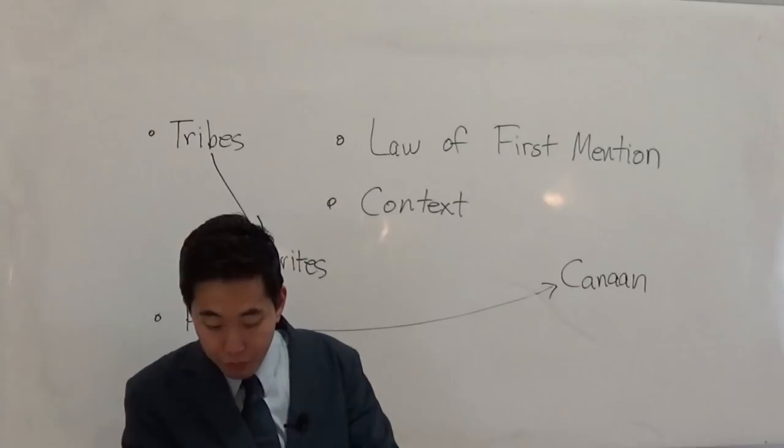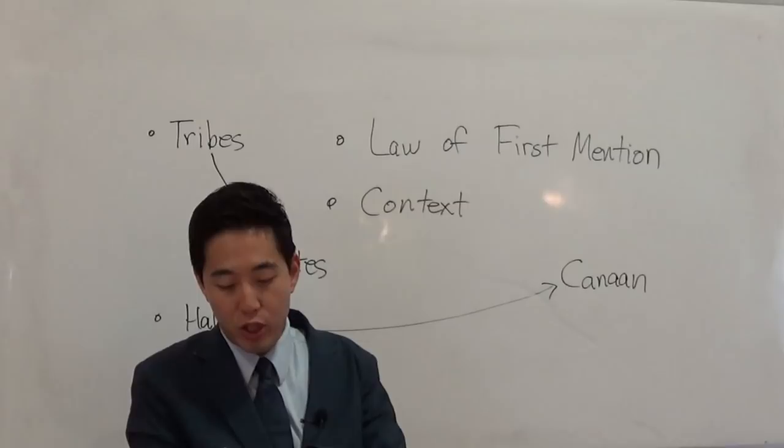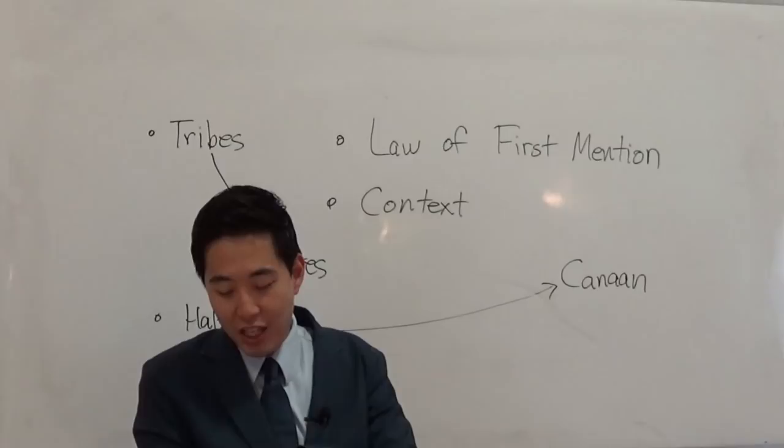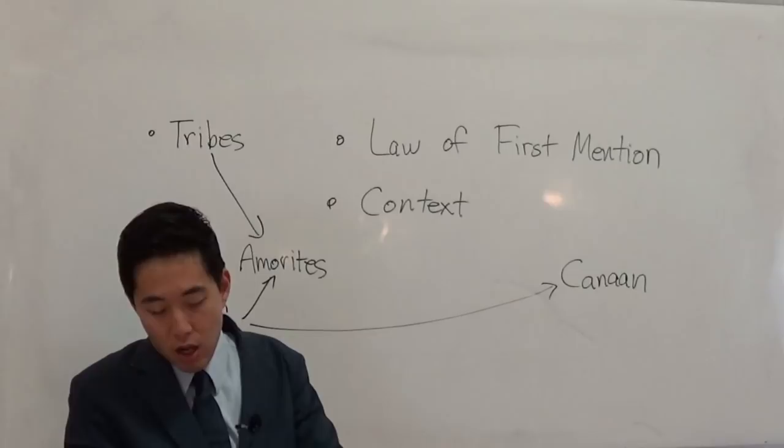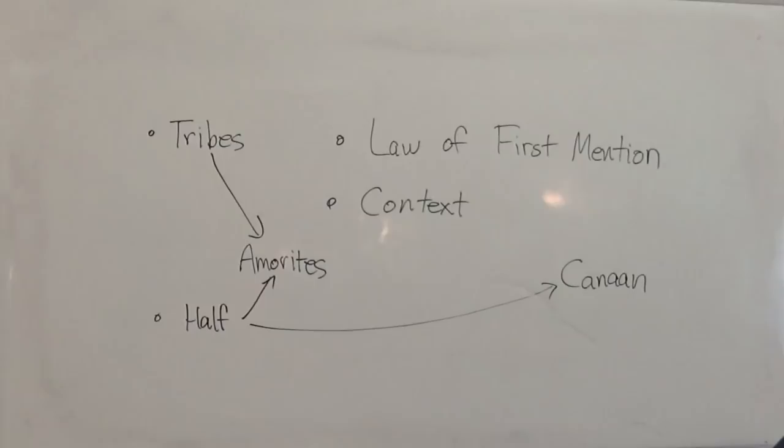Now, look at verse 3 from Syhar, which is before Egypt, even unto the borders of Ekron northward, which is counted to the Canaanite, five lords of the Philistines, the Gazathites and the Ashdathites, and the Ashkelonites, the Gittites and the Ekronites, also the Abites, from the south all the land of the Canaanites, and Mera, that is beside the Sidonians, unto Aphek, to the borders of the Amorites, and the land of the Giblites, and all Lebanon, toward the sun rising from Baal-gad, under Mount Hermon, unto the entering into Hamath. And then notice verse 6, God wants to divide the land. But he divides the land at verse 7, to who? Nine tribes.